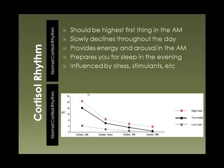Cortisol rhythm is one of the things we assess when we look at adrenal glands. At the bottom here you'll see a cortisol rhythm test from one of the saliva tests that we do. There is a red line at the top and a blue line at the bottom marking the upper and lower limits of where your cortisol level should be throughout the day, and the solid black line down the middle is the patient's value. This happens to be an essentially normal result, with samples at 8 in the morning, noon, 4 p.m., and midnight. Your cortisol should be highest first thing in the morning and decline slowly throughout the day — I describe this as landing an airplane. It provides energy and arousal in the morning, prepares you for falling asleep in the evening, and can be influenced by stress, stimulants, exercise, and any number of things.